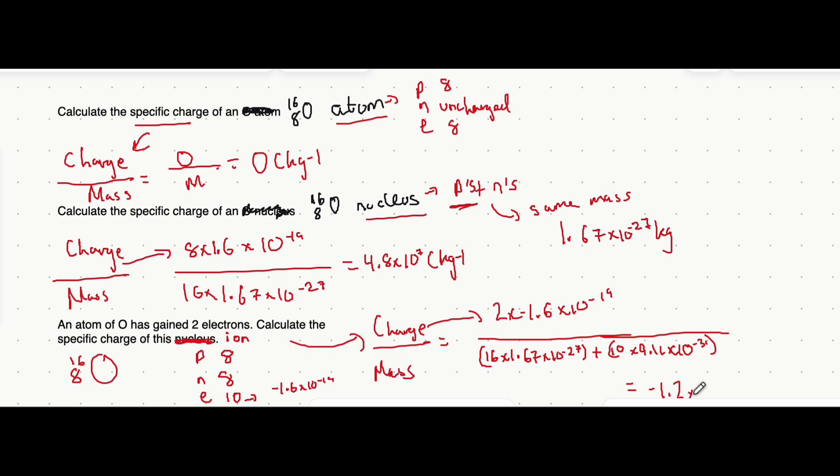1.2. You might notice that I'm writing these numbers in standard form. And that's how it always tends to pop up in mark schemes. So, I would recommend you do that as well. 1.2 times 10 to the 7 coulombs per kilogram.